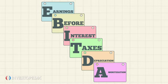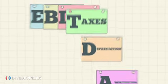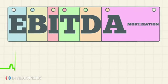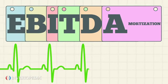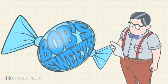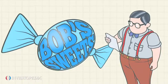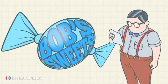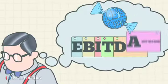It is frequently used as an indicator for a company's financial health. Bo is an accountant for Bob Sweets, and he needs to determine the company's EBITDA.